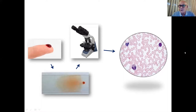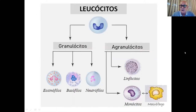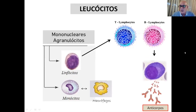Todo mundo sabe que são os glóbulos brancos os responsáveis pela nossa imunidade. Usando alguns tipos de corantes, conseguimos observar detalhes dessas células e classificá-las, seja pelo formato do núcleo, seja pela presença de grânulos — classificando-as em granulócitos ou agranulócitos, e como polimorfonucleares ou mononucleares.